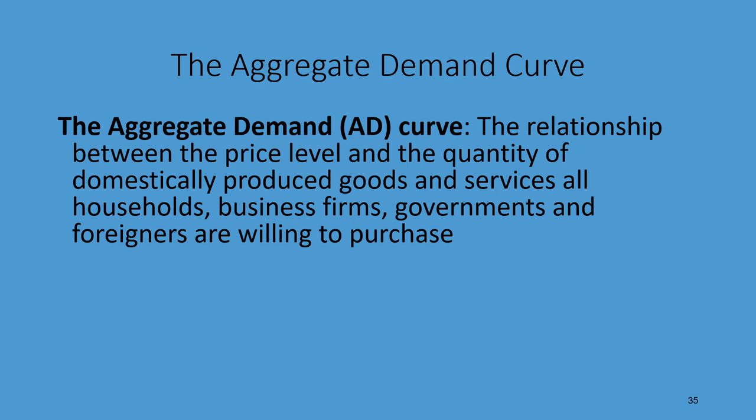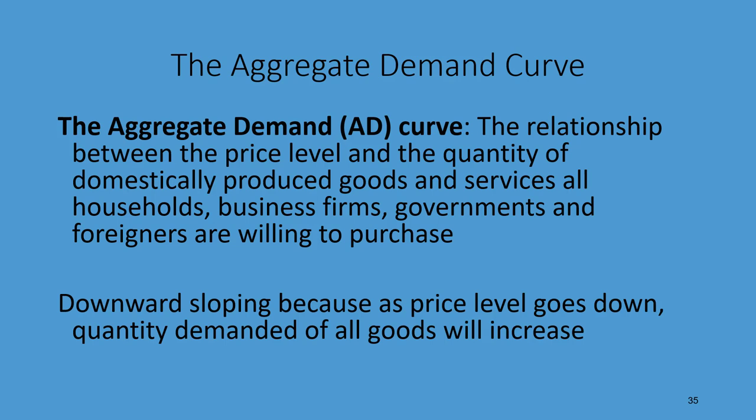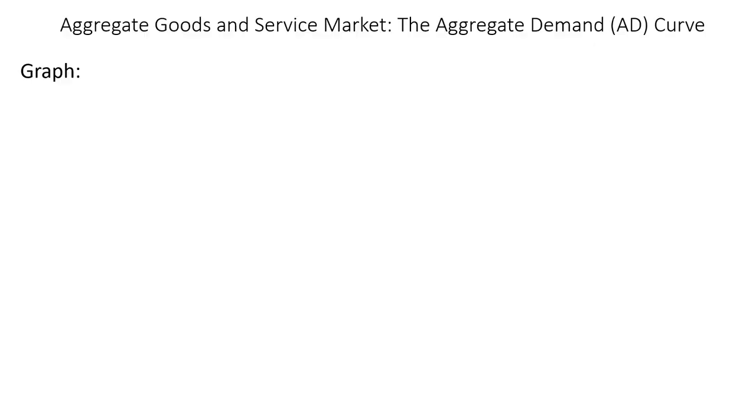The aggregate demand curve is the relationship between the price level and the quantity of domestically produced goods and services that all households, business firms, governments, and foreigners are willing to purchase — everything that goes into GDP, whether through consumption, investment, government expenditures, or exports. Remember, exports are added to GDP, so anything people from other countries buy from the United States would also be included as part of this aggregate demand curve. It is downward sloping: as the price level goes down, the quantity demanded for all goods will increase.